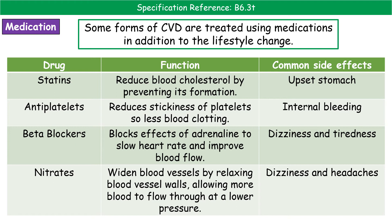If cardiovascular disease does develop, treatment options are available. The first step is usually medication — four categories to know. Statins reduce blood cholesterol by preventing it from forming, so it can't be deposited in arteries. Antiplatelets reduce platelet stickiness to decrease blood clotting. Beta blockers block the effects of adrenaline, slowing heart rate and improving blood flow. Nitrates widen the blood vessels by relaxing vessel walls, lowering blood pressure.